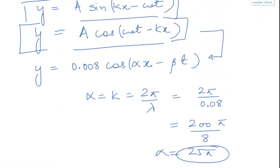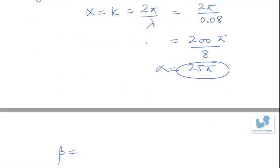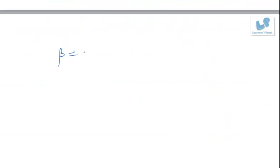Similarly, the value of β — if you compare the two equations, this β must be ω. So β is equal to ω, and ω can be written as 2π/T, which is the time period.